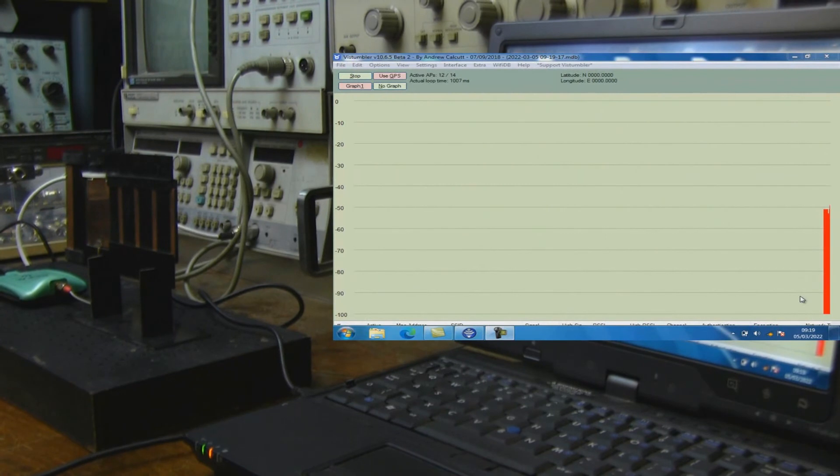So here we are then, scanning at the moment connected to the test signal that I've set up. We're around about minus 50 dBm on the graph at Vista Stumbler and it seems a pretty stable signal there. What I'm going to do now is reconfigure it into the optimized position and see if we see a signal increase. It takes a little bit of time for Vista Stumbler to update, there's a little bit of a lag, but hopefully we'll see a bit of a difference.